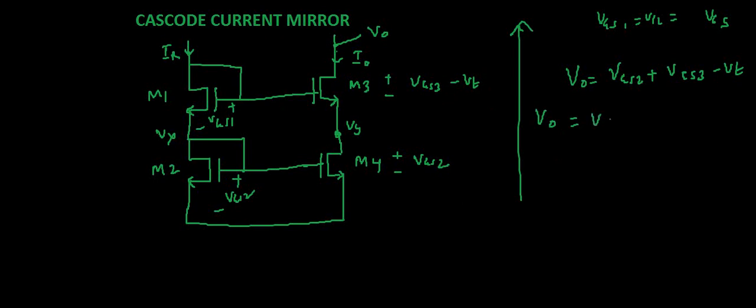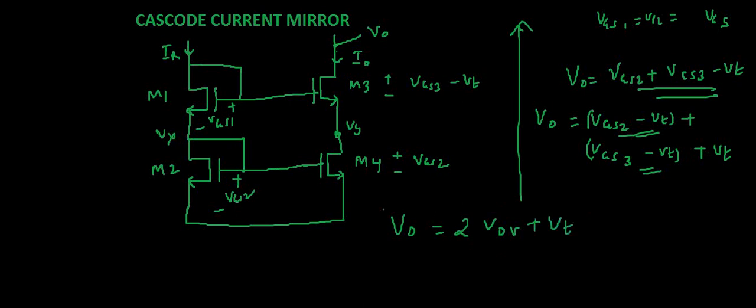So this is VGS2 minus VT plus VGS3 minus VT. Here we have subtracted VT, so let's add VT so that both this gets cancelled and we have the original equation. Here the voltage can be called as the output overdrive voltage, that is VGS3 minus VT, so we have VOV plus VOV plus VT, that is twice overdrive voltage plus VT. So this is the minimum output voltage, that is 2 overdrive plus VT. This should be there then only this cascode current mirror will work.